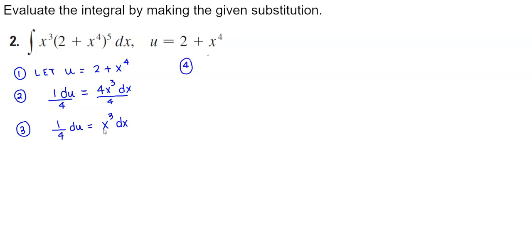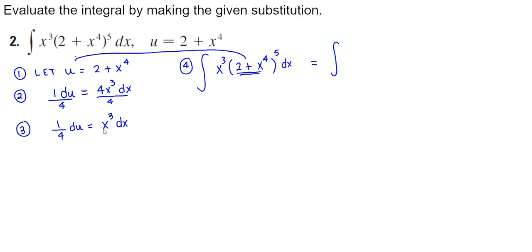Now let's write out the integral that's given: x cubed times (2 plus x to the fourth) raised to the fifth power dx. We know that 2 plus x to the fourth equals u, so that becomes u to the fifth power. And x cubed dx equals 1/4 du, so we multiply by 1/4 du.